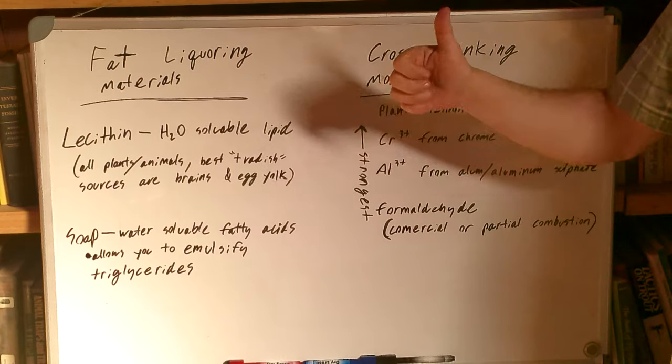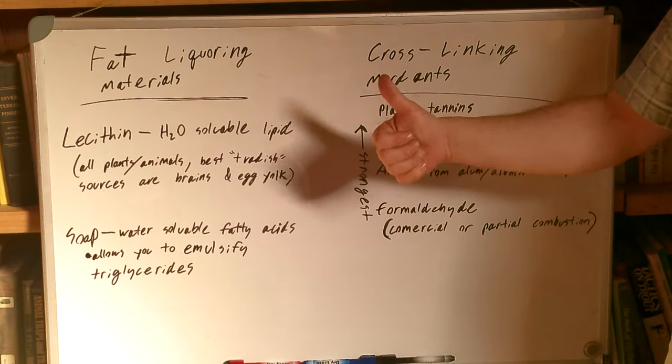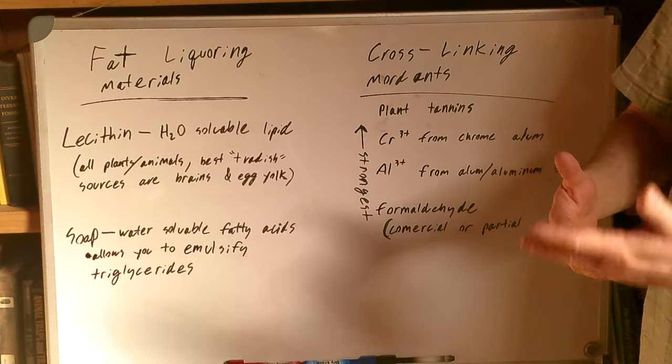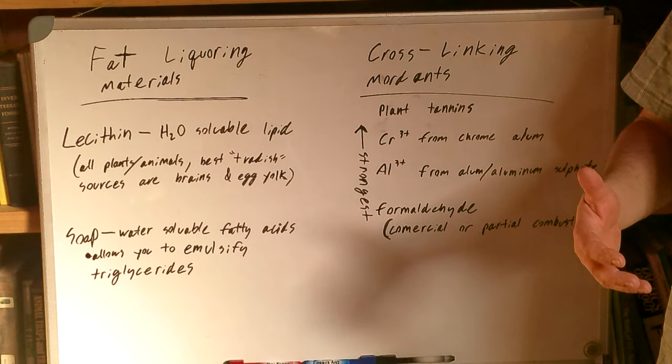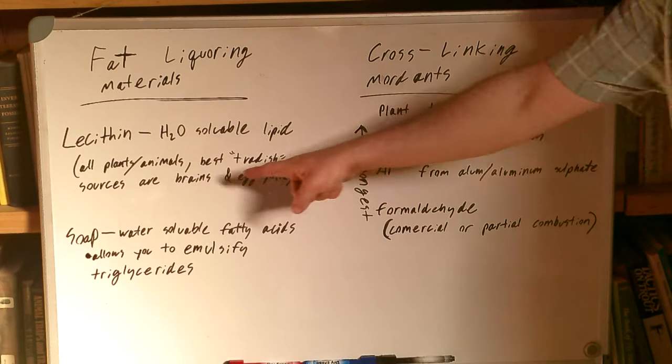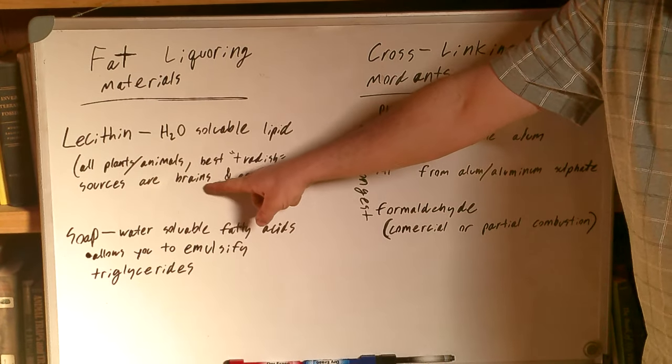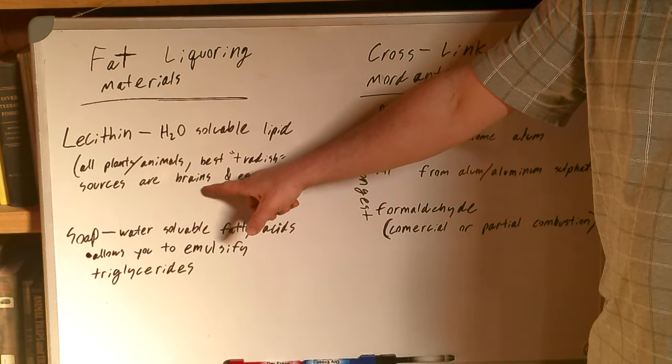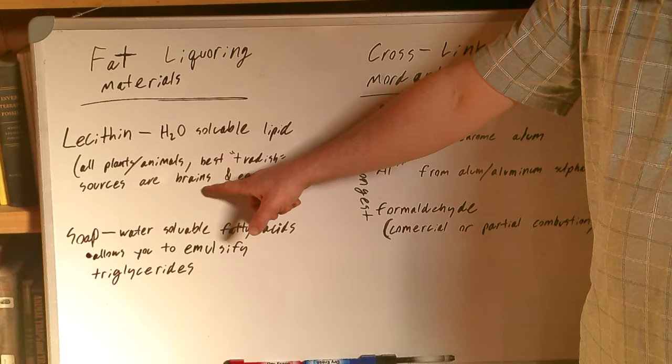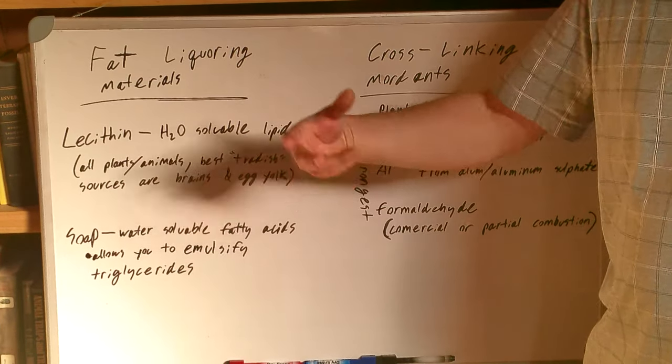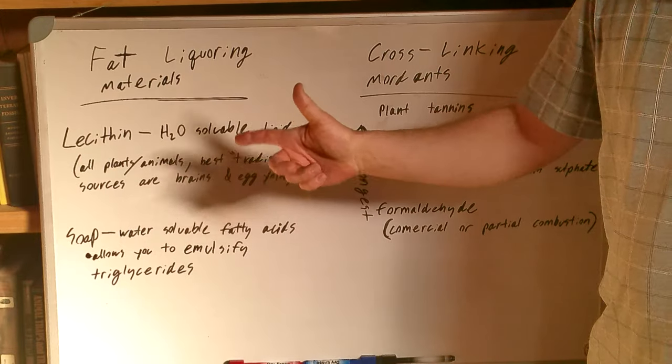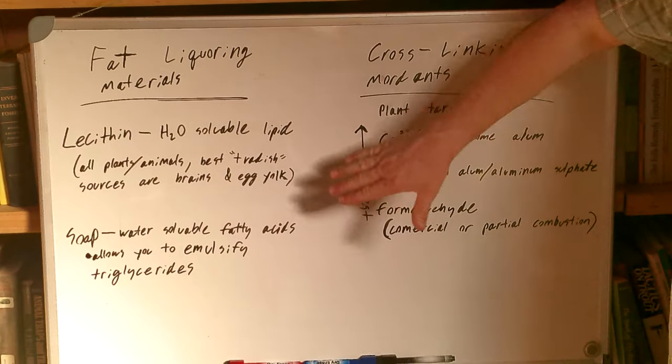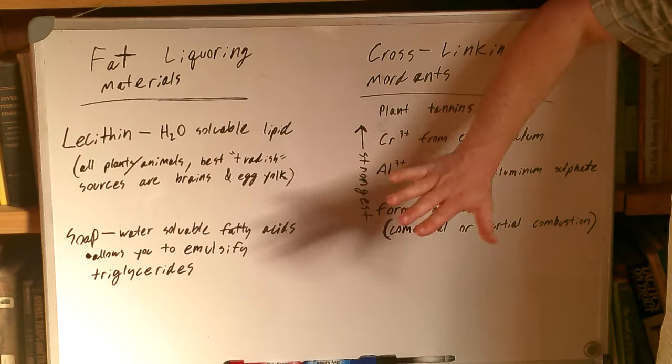Got a little bit more going on, though. Lecithin is produced in all animals and plants. It's everywhere. There are three good sources of lecithin for you as a leather tanning person. One is the health food store. You can just get dried, purified lecithin. And you can redissolve that. You can use it alone and or with other fats as an emulsifying agent. The second is brains. Brains are chock full of lecithin because it's such a fatty organ that you need a lot of lecithin for the brain cells to be able to manage their fat content. The same is true of egg yolk, which is the third source.